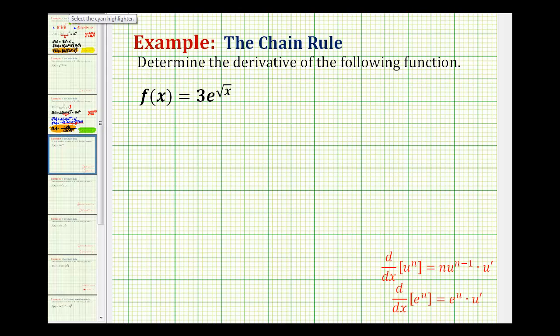So by now we know that when we have a composite function, we want to let u equal the inner function, which here isn't quite as clear. But if we let the exponent equal u, we could rewrite this as 3e to the u, and then we could apply the chain rule.